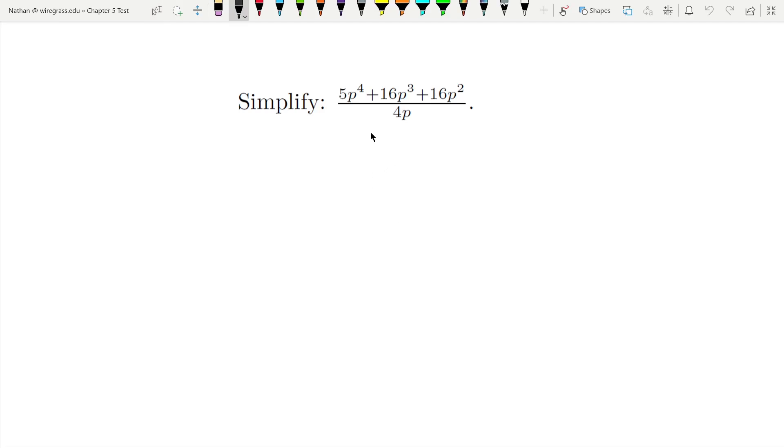Alright, to simplify this statement I can break this fraction up over each one of these parts on top. As long as you break it up so that this one's going to be over 4p, this one's going to be over 4p, this one's going to be over 4p, so we're going to get 5p^4 over 4p plus 16p^3 over 4p plus 16p^2 over 4p.